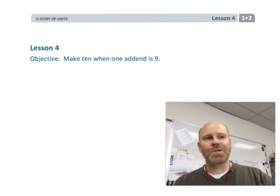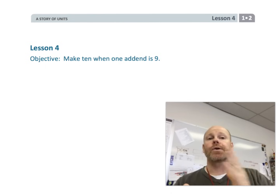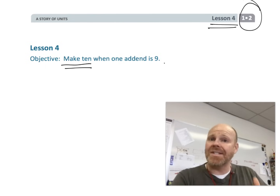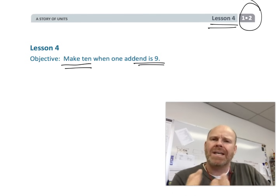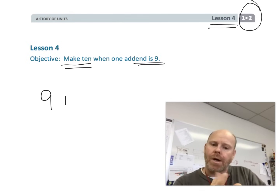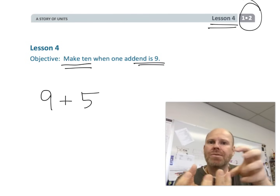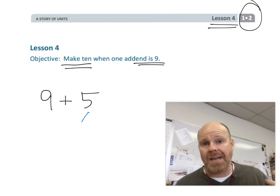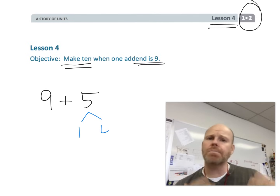This is first grade module 2 lesson 4. In this lesson we are going to continue making 10 when one of the addends is 9. It's a particular strategy where we want to teach students a variety of strategies — this one involves decomposing a number to make a nice benchmark number. 10 is our landmark benchmark number, and so we're going to continue practicing that.